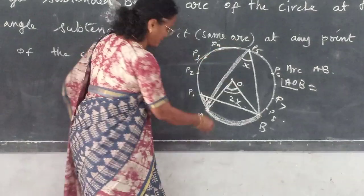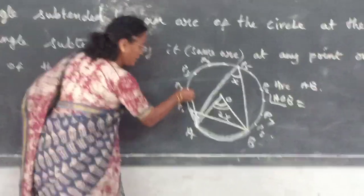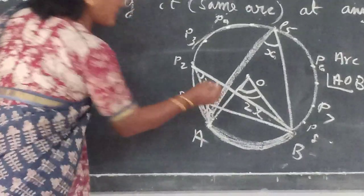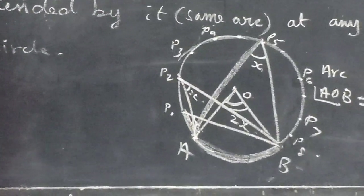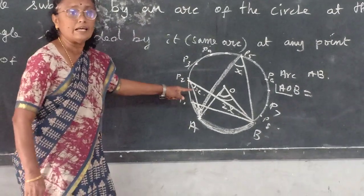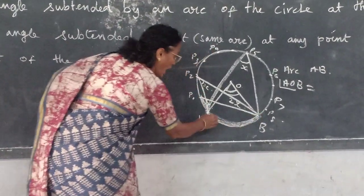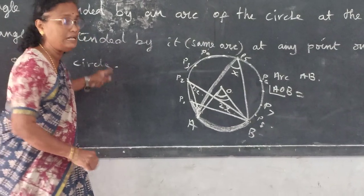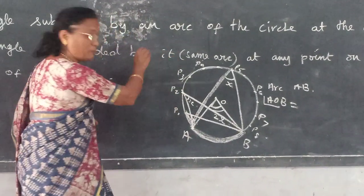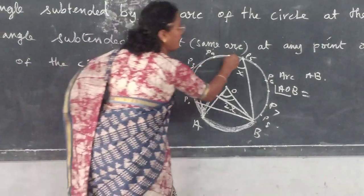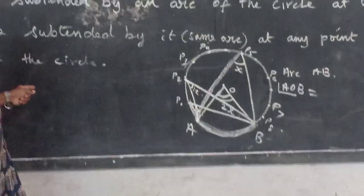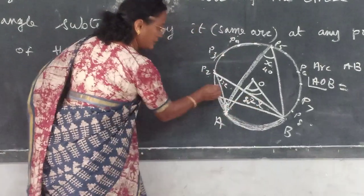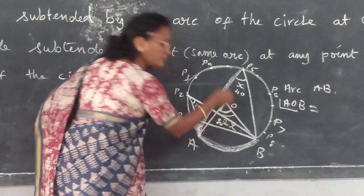You can take many angles here. From A, you can join P1, P2. From P2 you join to B. This angle is also X. The angle subtended by an arc of the circle at the center is double the angle subtended by it — same arc. Suppose if this center angle is 40, then this is 80. This angle at the remaining part is also 40. 40 at the remaining part means the center angle is 80.